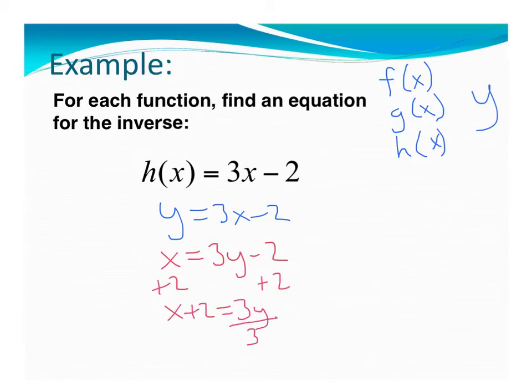Then I'm going to divide by 3, and I'm left with y equals x plus 2 over 3. Or if we want to put it so it looks like it's in slope-intercept form, we'll have y equals x divided by 3, which is the same as 1 third x plus 2 over 3.